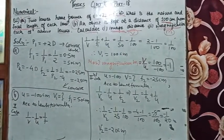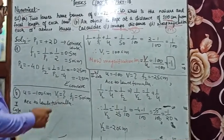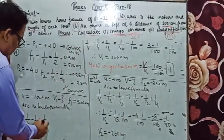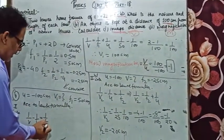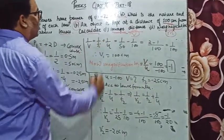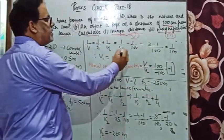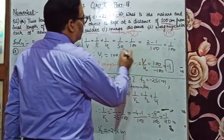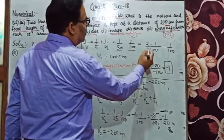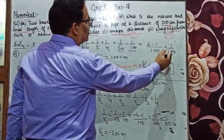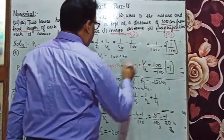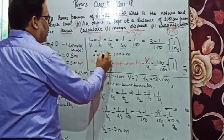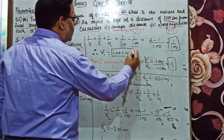Lens formula: 1/v - 1/u = 1/f. So 1/v = 1/f1 + 1/u, which gives us 1/50 + 1/100. If we take this further, we have 2 - 1 = 1, so 1/v = 1/100. The image distance v is 100 cm.